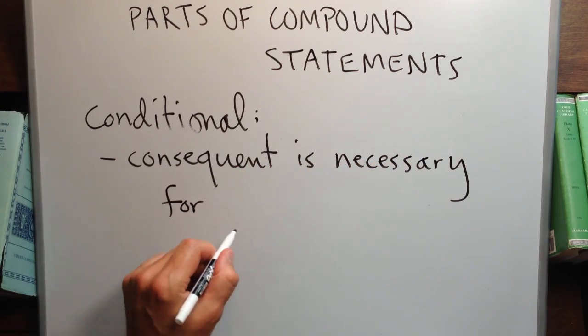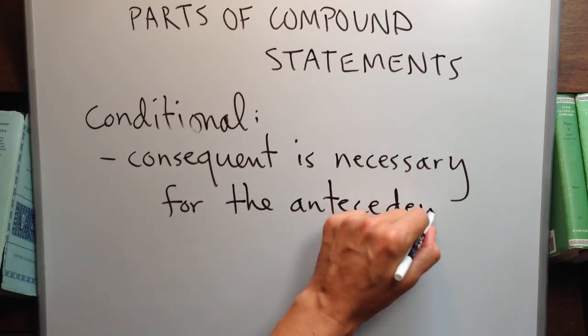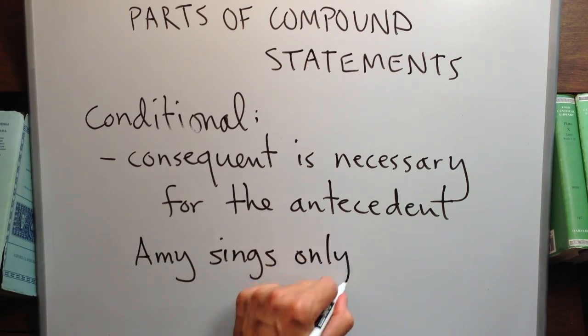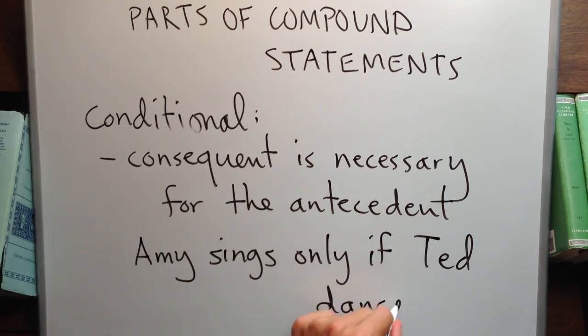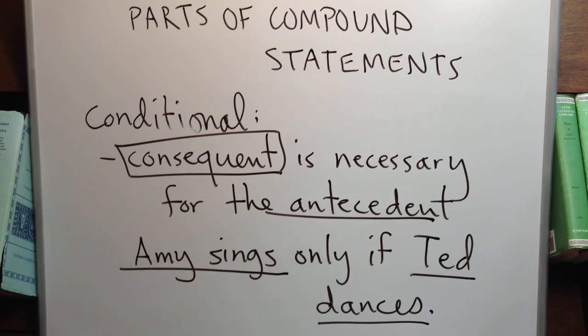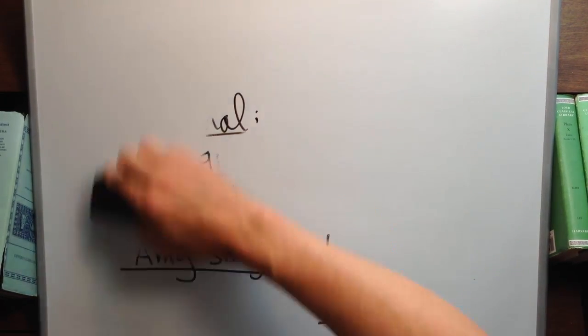The consequent is a necessary condition for the antecedent. If I say, Amy sings only if Ted dances, Ted dances is the consequent. And it's a necessary condition for the antecedent, Amy sings, as indicated by the phrase, only if.